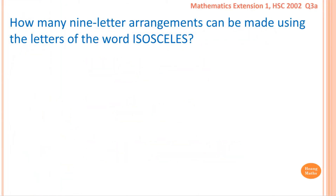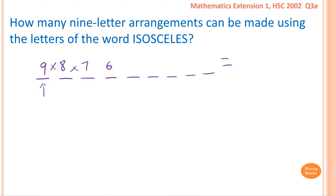How many nine-letter arrangements can be made using the letters of the word ISOSCELES? We know that there are nine letters in the word ISOSCELES — one, two, three, four, five, six, seven, eight, nine. So the first one we choose, we have nine choices, and because we chose one already, we only have eight letters left. So we have eight, then seven, then six, and so on — all together we multiply them, so that means nine factorial.